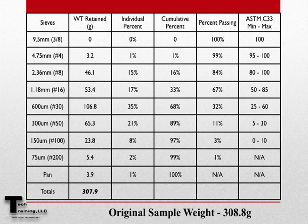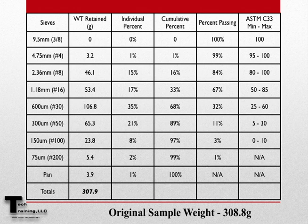Let's now compare our results to the specification presented in ASTM C33, Standard Specification for Concrete Aggregates. In Section 6, the grading requirements are presented for a fine aggregate sample. It states that on the 9.5mm sieve, 100% of the sample must pass — which is what occurred with our sample. For the 4.75mm sieve, 95% to 100% of the sample must pass, and our sample had 99% passing. Therefore, we are within the specification. Looking at the rest of the numbers, our sample meets the specification of ASTM C33, Standard Specification for Concrete Aggregates.